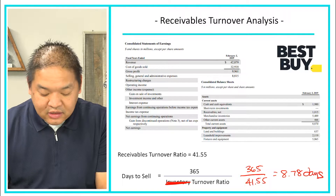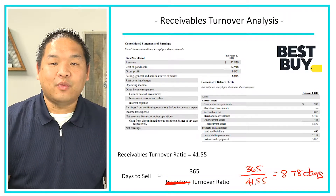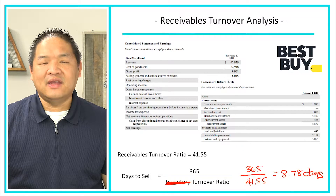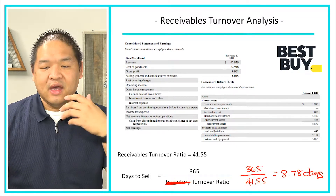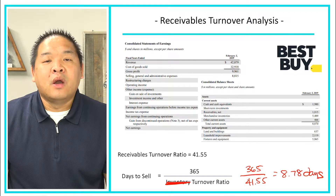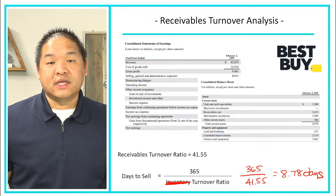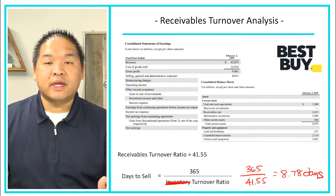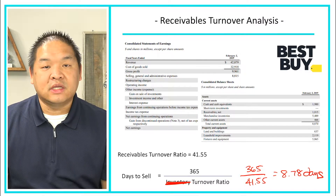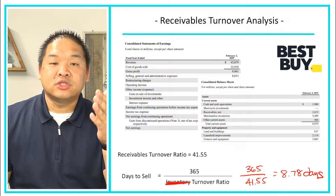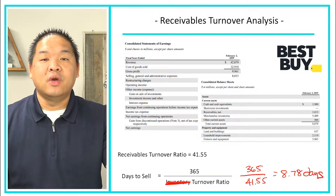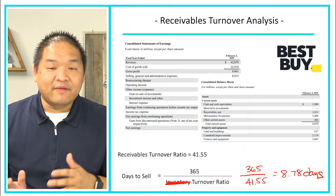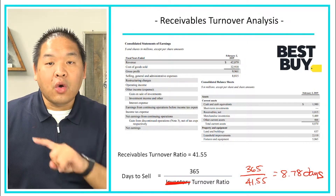So 365 divided by 41.55 equals 8.78 days. On average it takes Best Buy 8.78 days to collect their cash. If you've been to a Best Buy you might wonder how it's 8.78 days when you pay cash up front — but this also includes credit card sales and corporate sales. Corporate sales create receivables, and credit card sales mean the credit card processor has to process the transaction and deposit the money into Best Buy's bank account, which takes some time.